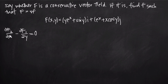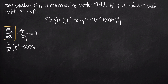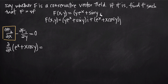To find the partial derivative of F sub 2 with respect to x, we take the partial derivative of the coefficient in front of j, which is e to the x plus x cosine y. Note that sometimes the vector field is written in coordinate point notation — y e to the x plus sine y, comma, e to the x plus x cosine y — and these two forms are exactly the same.